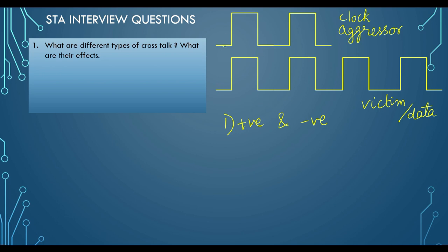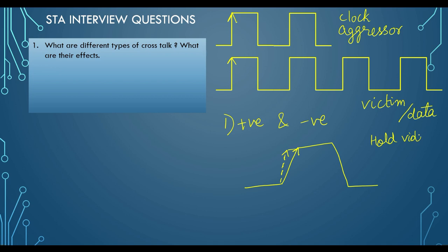If the crosstalk is positive, it means that when the clock is switching, your data is also switching in the same direction. When that happens, the transition of your data path improves. It looks like that would be good for you, but it does not always help. Because your waveform will actually transition faster — if there is some transition you are expecting in the data and crosstalk is occurring, that transition improves, making your entire data path faster. That time there will be hold violations.